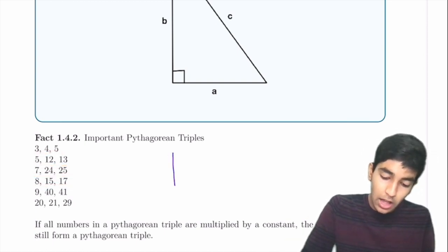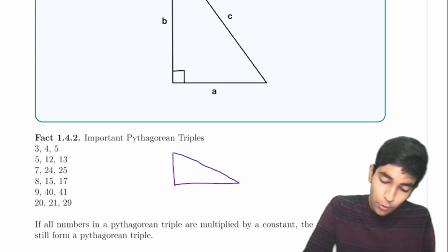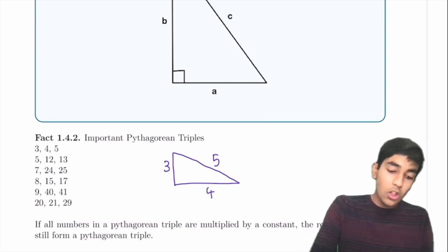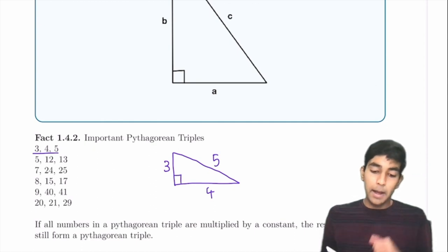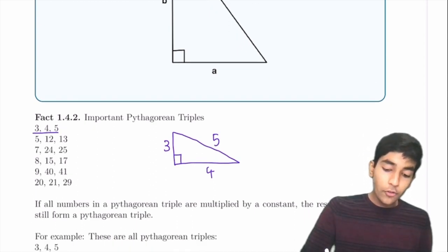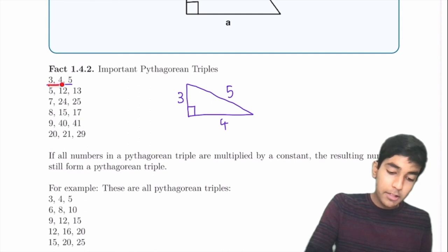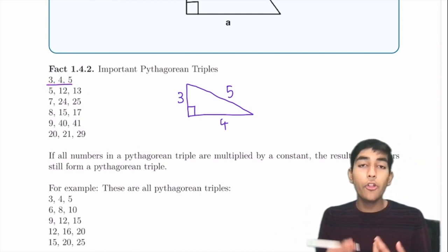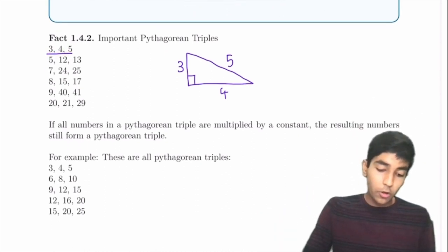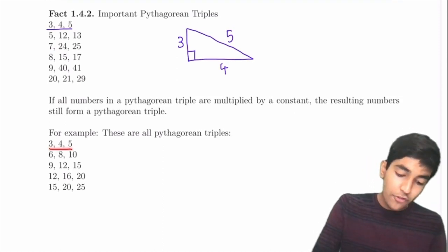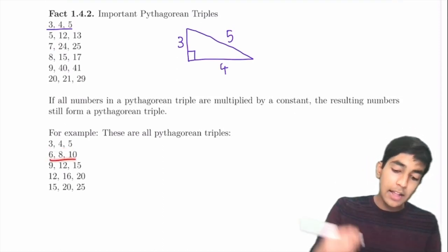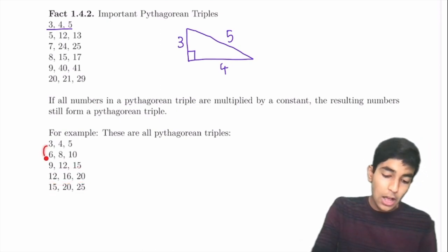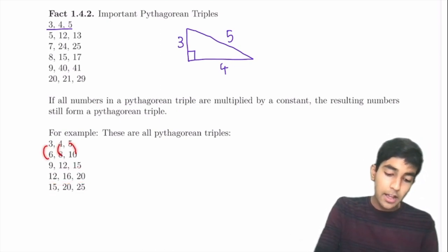If a problem gives you a triangle with sides 3, 4, 5, you immediately know it's a right triangle since 3-4-5 is a Pythagorean triple. Also, if you multiply all three numbers of a Pythagorean triple by a constant, they'll also form a Pythagorean triple. So 6-8-10 and 9-12-15 are also Pythagorean triples.